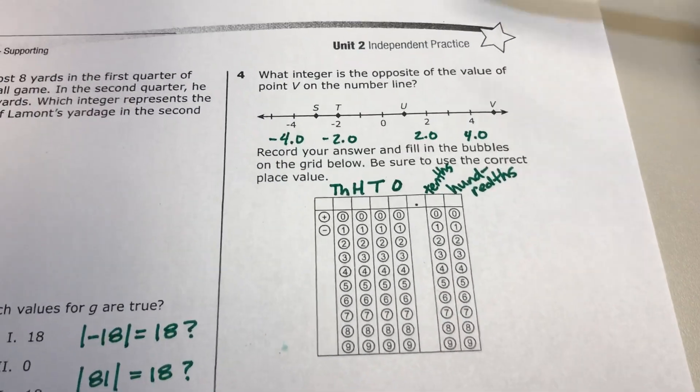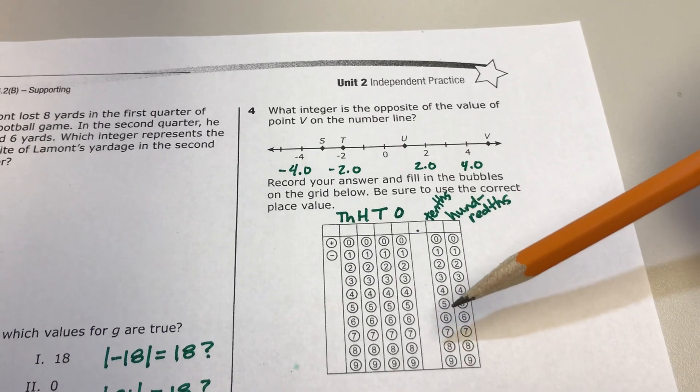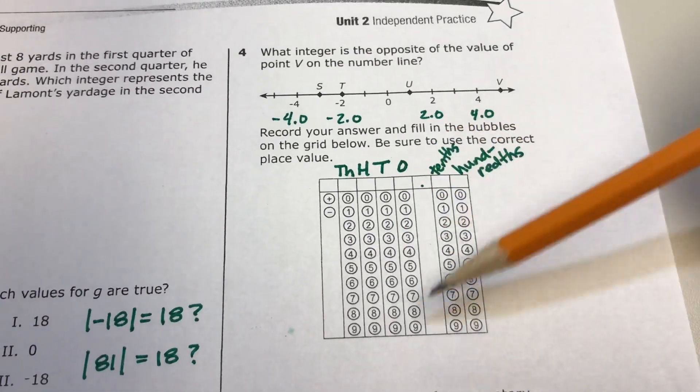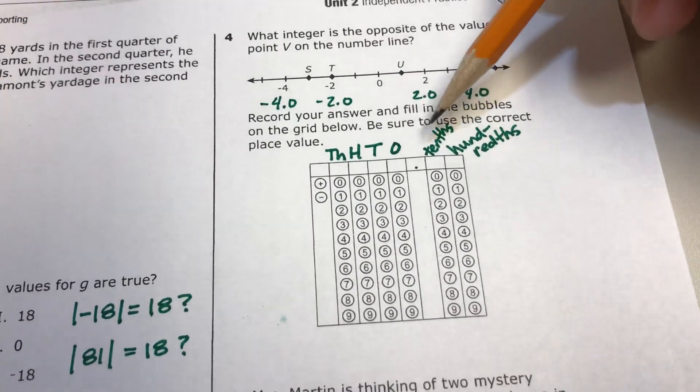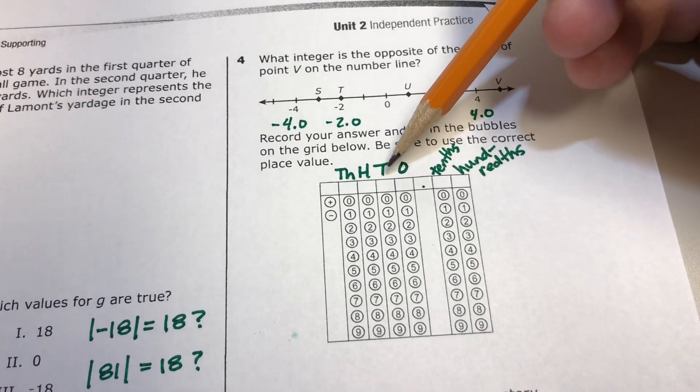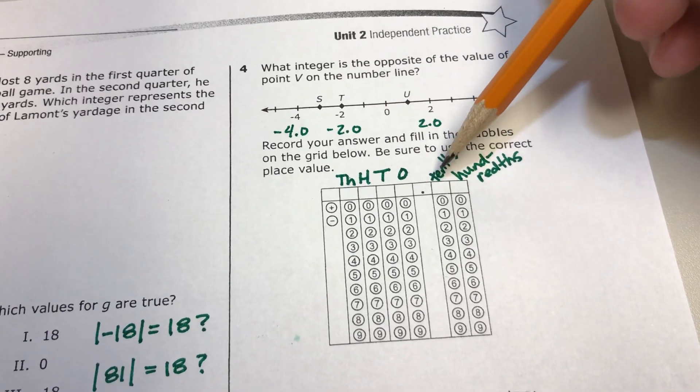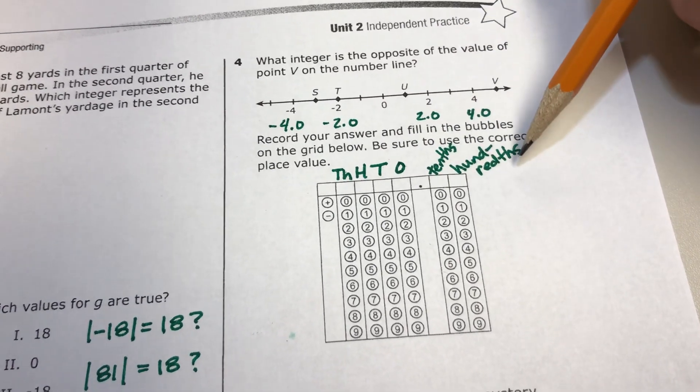All right, lots of questions today about gridding numbers correctly. I want to remind you, these deal with place value. So you got to know where your decimal point is. To the left of the decimal is your ones place, then your tens, then your hundreds, then your thousands. To the right of the decimal, that's your tenths and your hundredths.